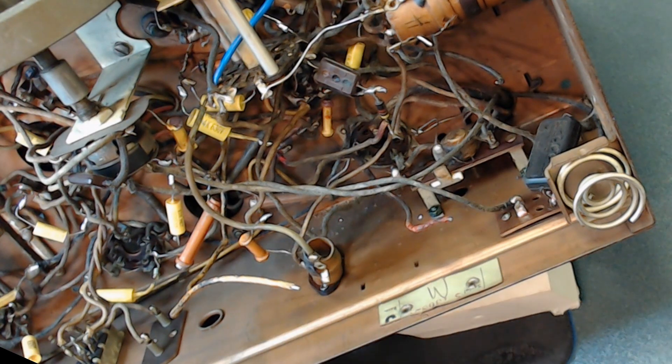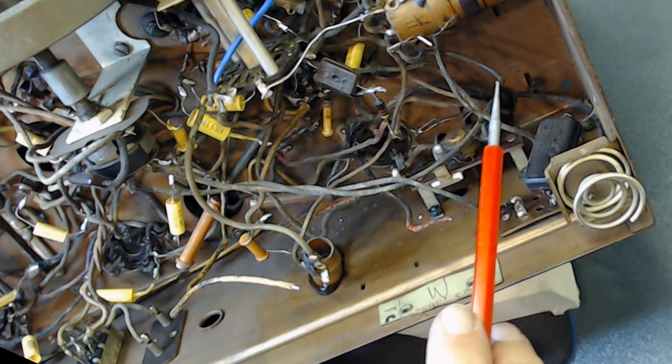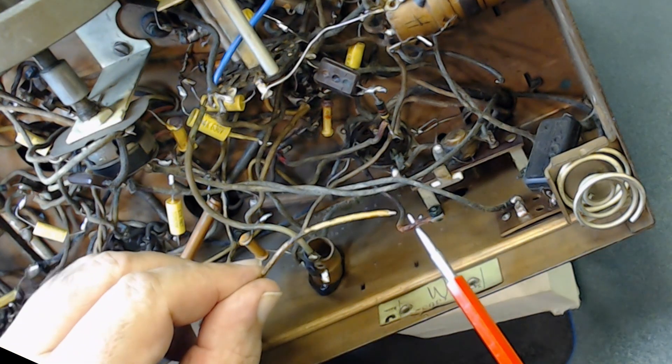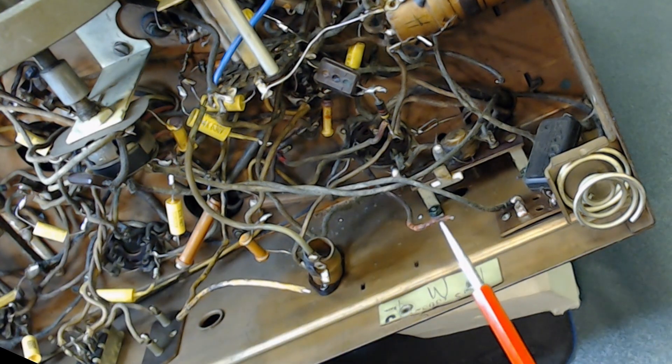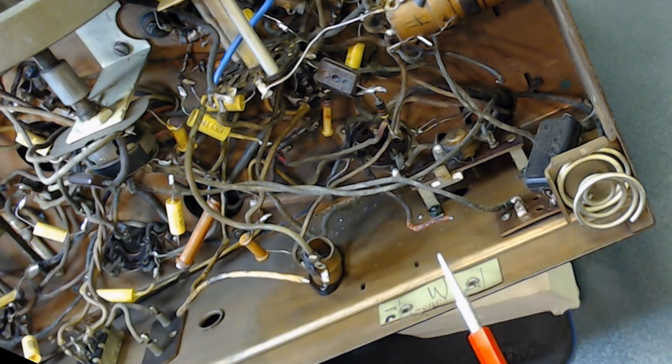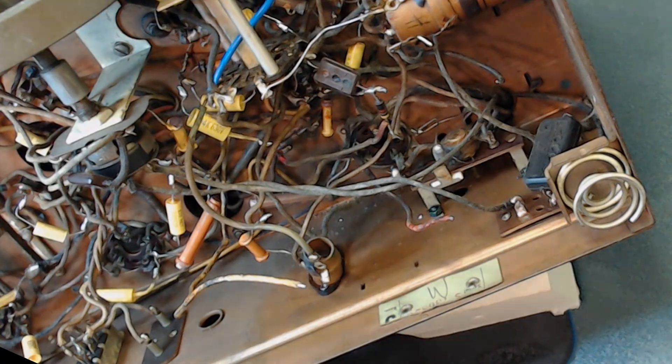There are three wires coming out of the electrolytic capacitor. One is black, which is ground or negative. These two, one is red, another is orange, I need to figure out which one is 6 microfarad and which one is 16 microfarad. Let me show you what I did.